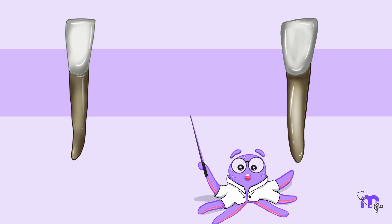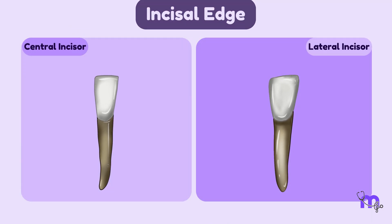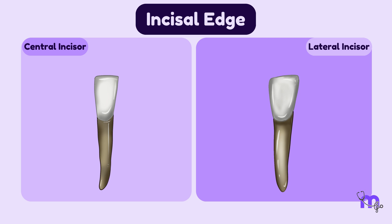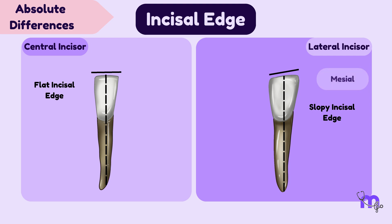Next, let's examine their labial aspect. First, let's trace the incisal edge. We can observe an absolute difference. In the central incisor, the incisal edge is straight and perpendicular to the long axis of the tooth. However, in the lateral incisor, it slopes downwards in the cervical direction as we move from the mesial to the distal end of the incisal ridge.